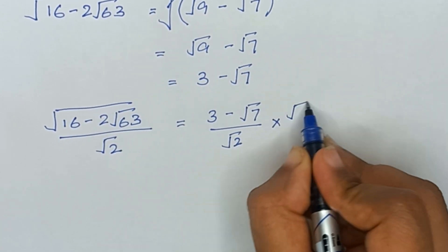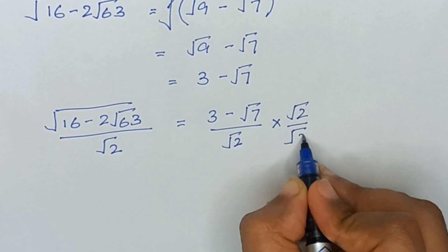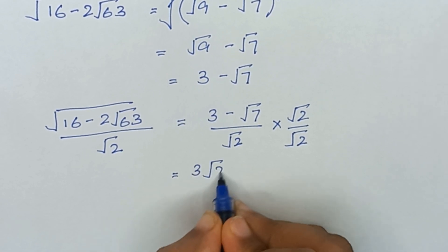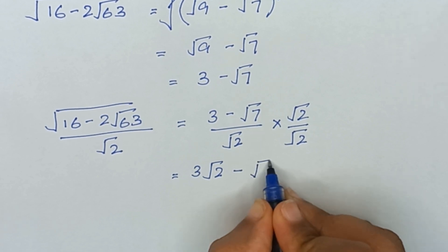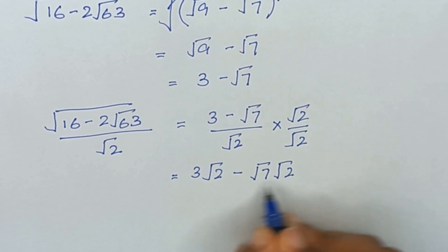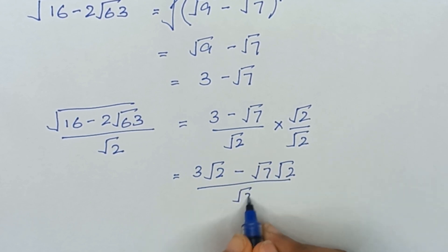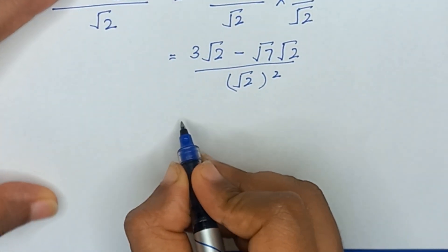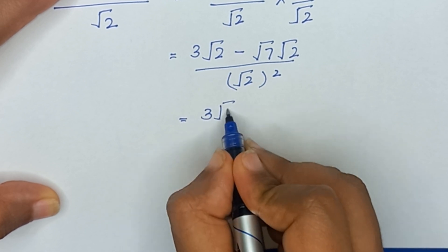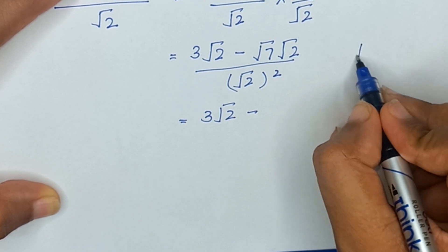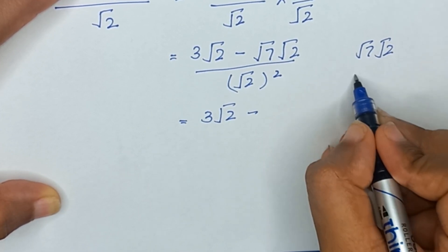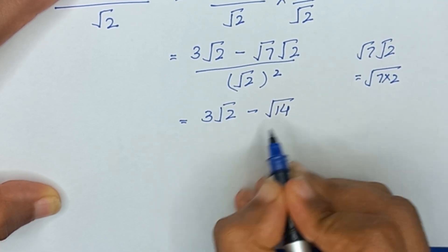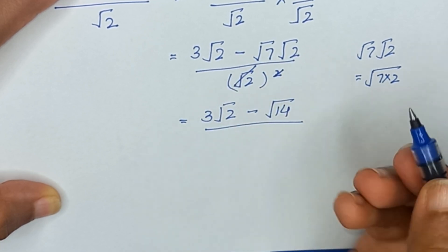We rationalize by multiplying by √2 over √2. The denominator becomes √2 squared, which equals 2. The numerator gives us 3 times √2 minus √7 times √2, and we can write √7 times √2 as √(7×2), which equals √14. So the numerator is 3√2 minus √14, divided by 2.